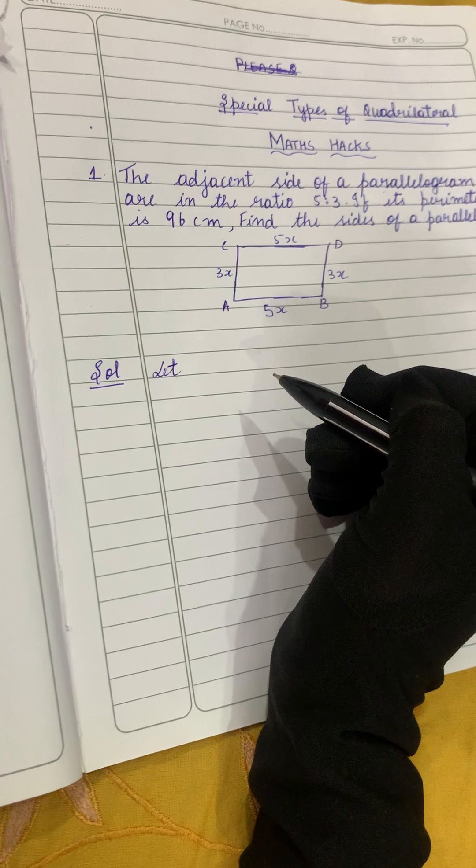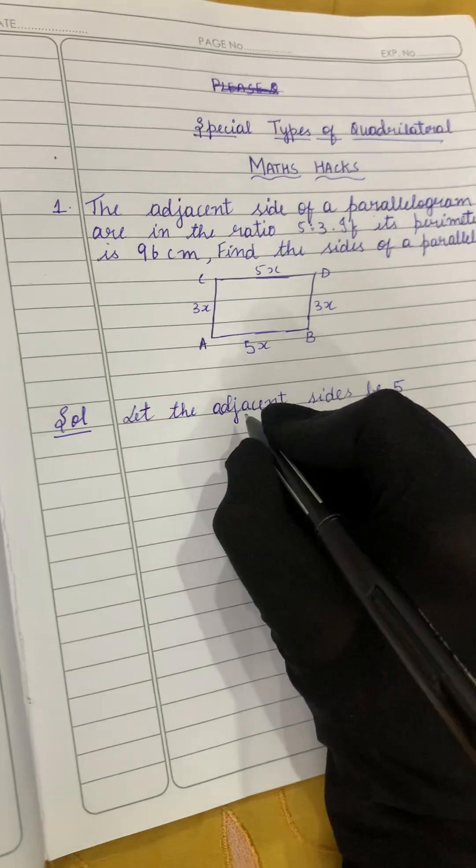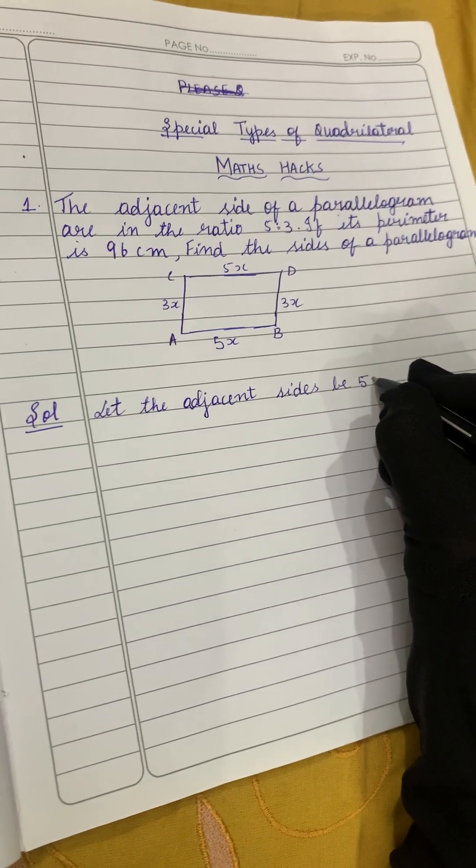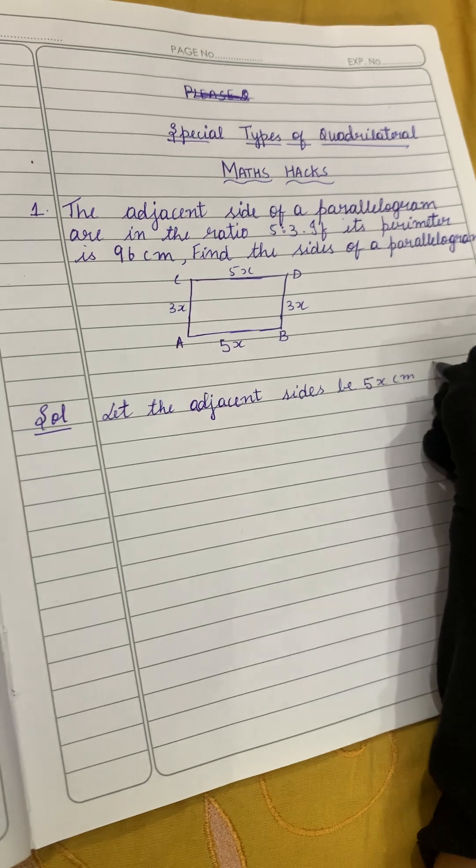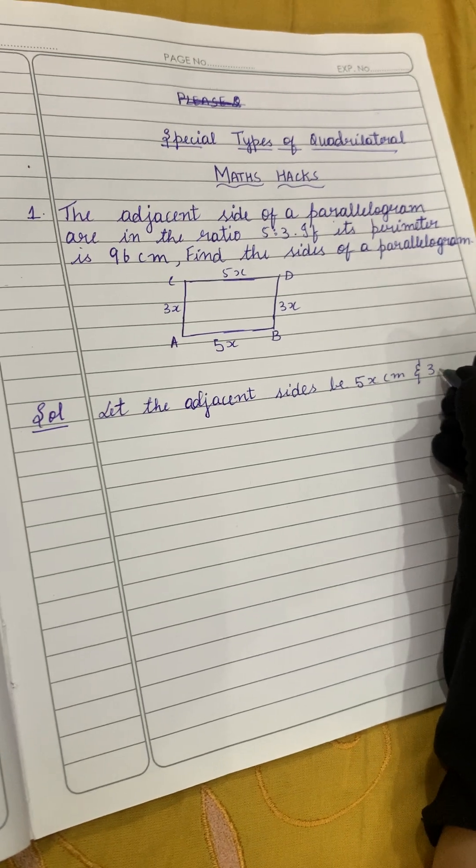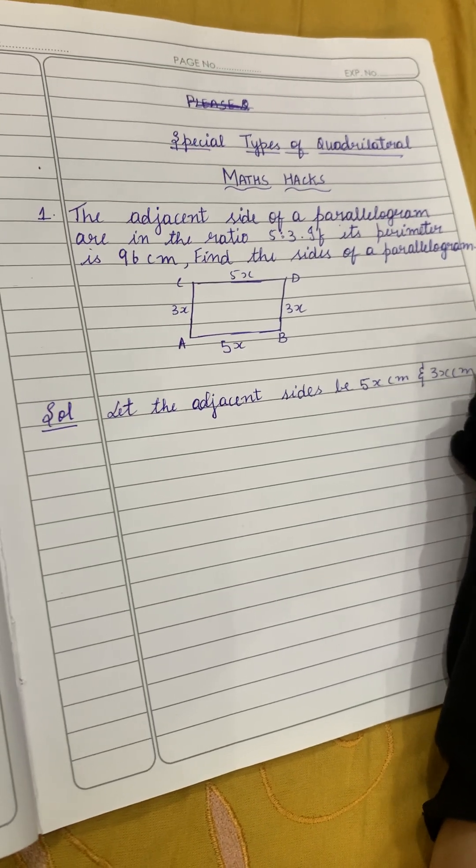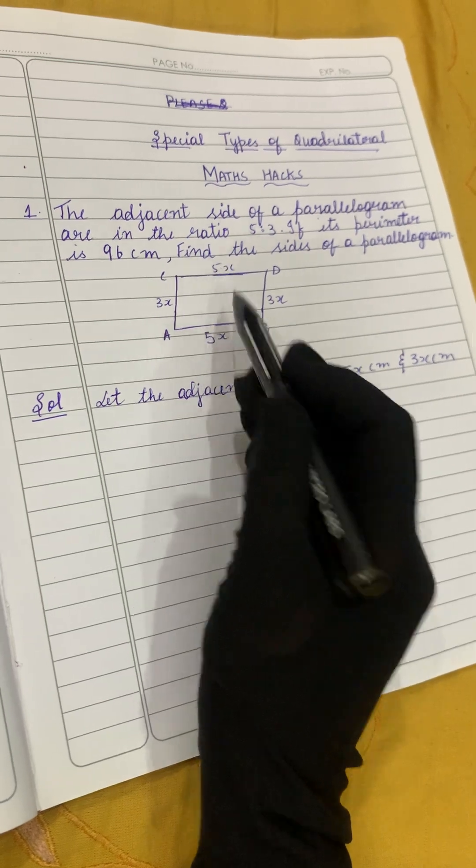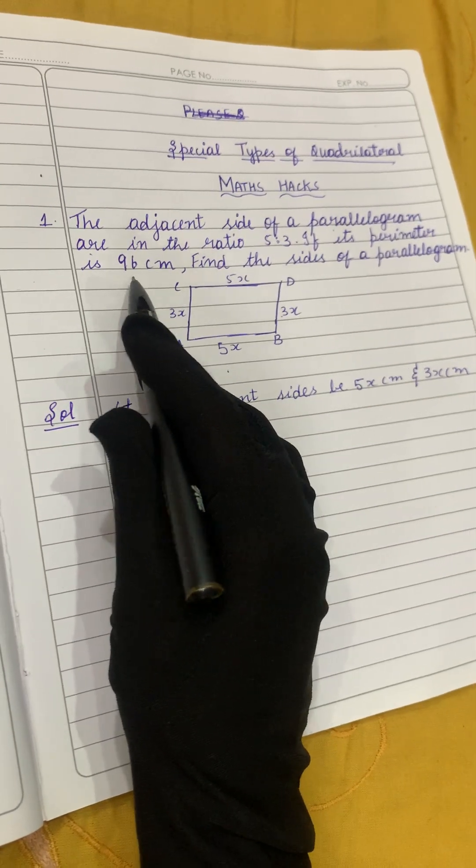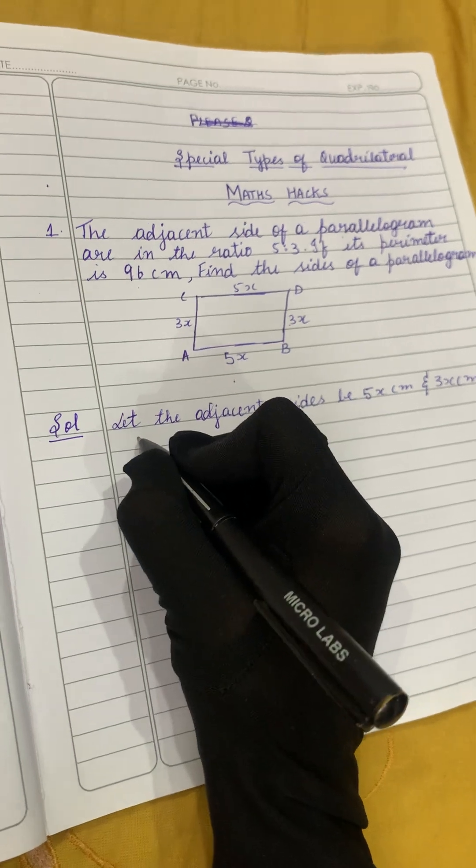Let the adjacent sides be 5x and 3x centimeters. Let's write that: let the adjacent sides be 5x centimeters and 3x centimeters. Now here the adjacent sides are 5x centimeters and 3x centimeters.